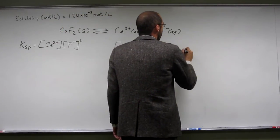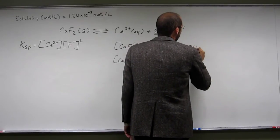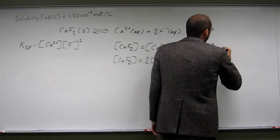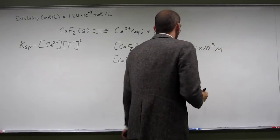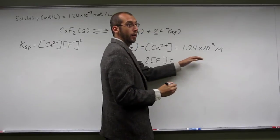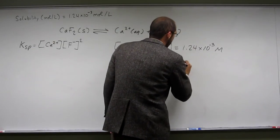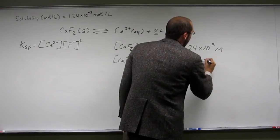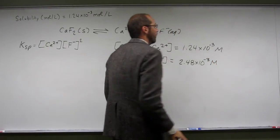So when we do this, this is going to be 1.24 times 10 to the negative third molar. And this is going to be two times that number. So what is that? 2.48. We'll do that without a calculator, pretty amazing.